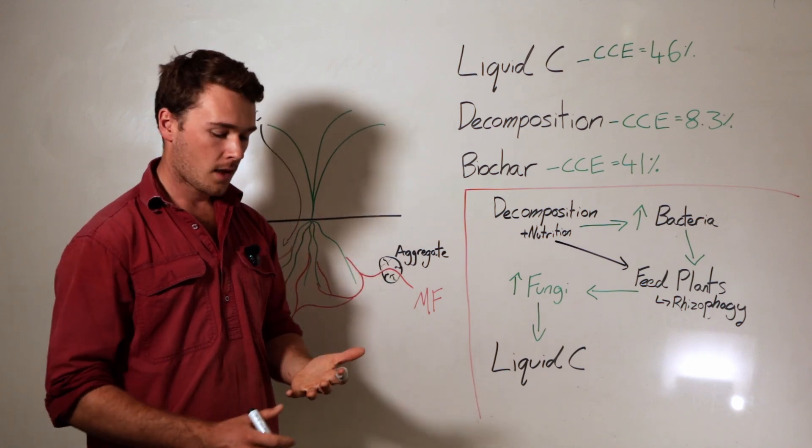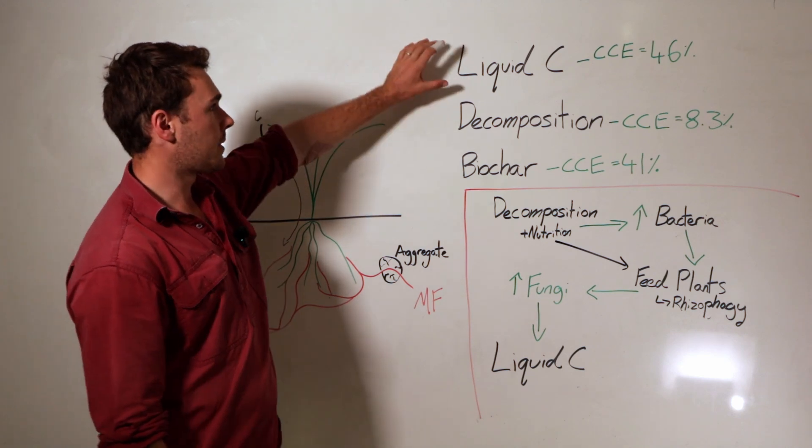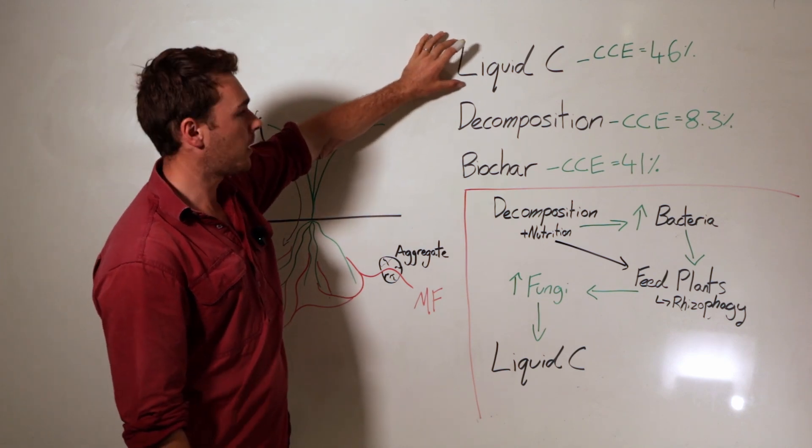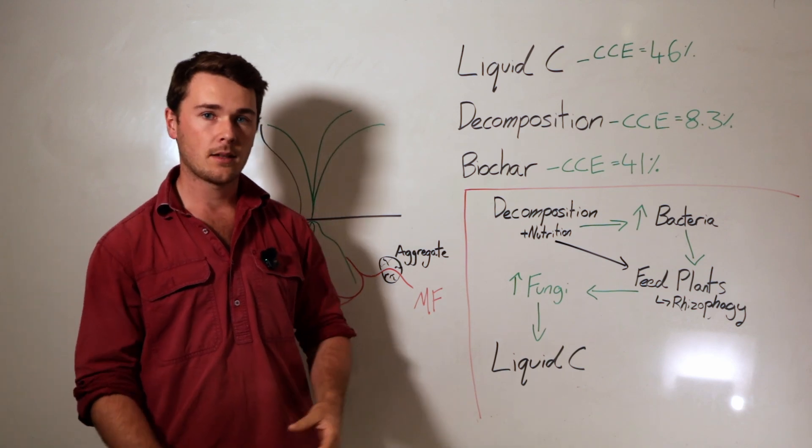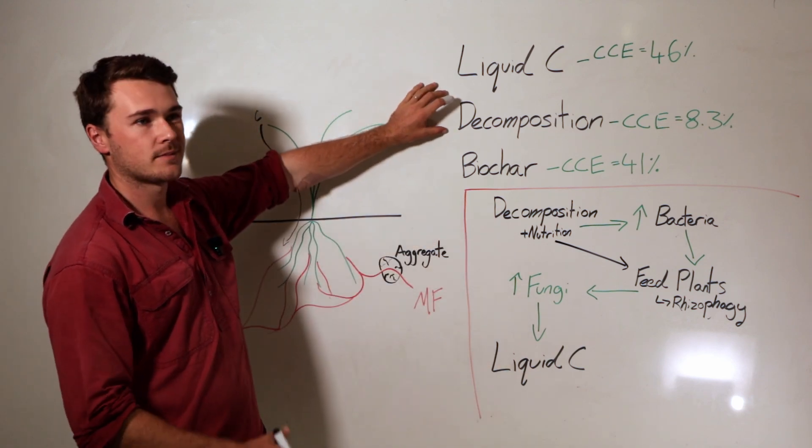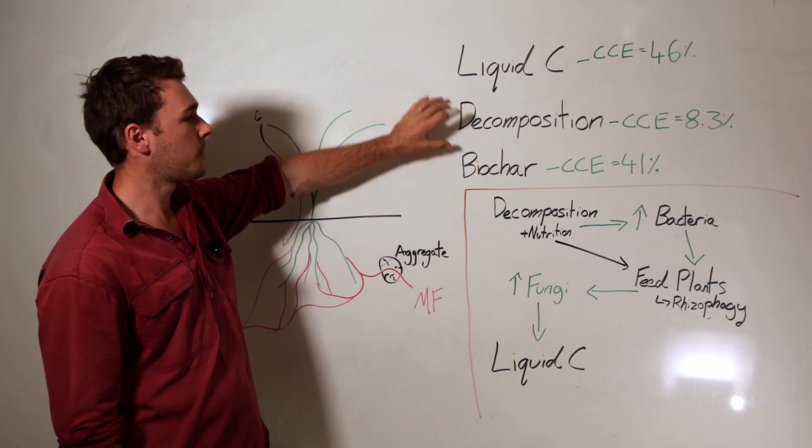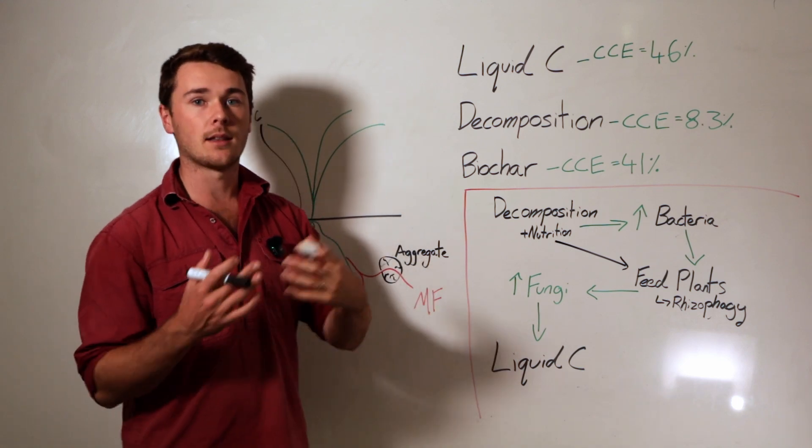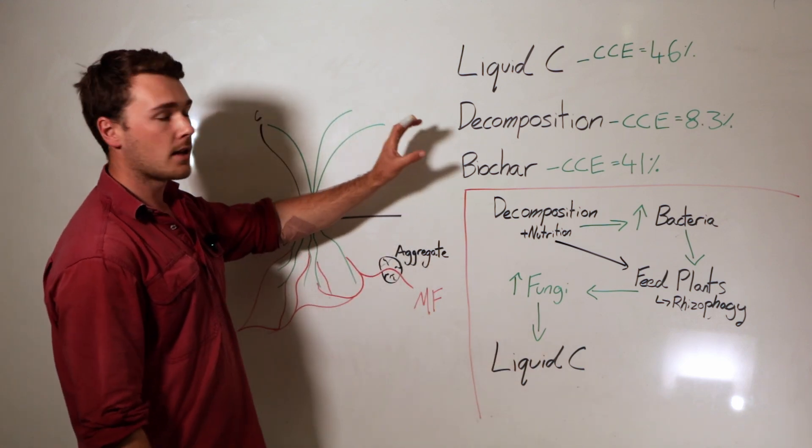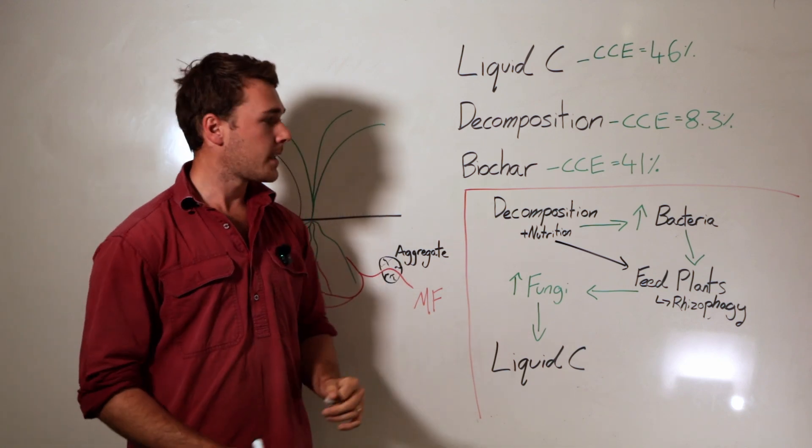All of that can be done focusing on the liquid carbon pathway. If we want to increase our biology rapidly and cycle nutrients, we want to focus on the decomposition pathway. Maybe we use the biochar as a nutrient and biology deliverance pathway rather than a soil organic carbon building pathway.